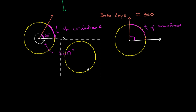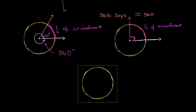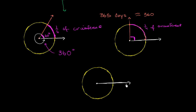Let's do one more example to make sure we understand what's going on. Let's say we have an angle where I put its vertex at the center of the circle. That's one ray of the angle, and let's say this is the other ray. I encourage you to pause this video and try to figure out what the measure of this angle right over here is.